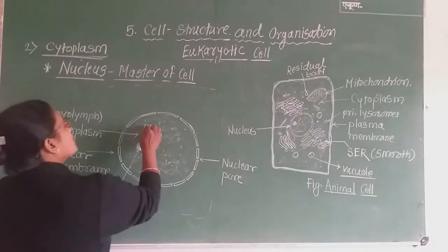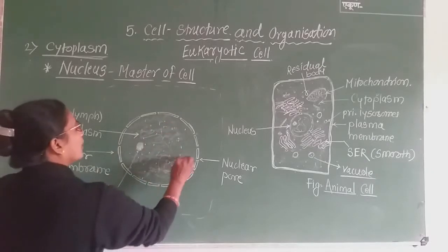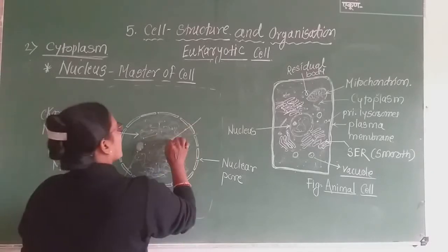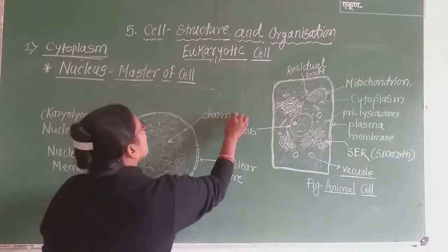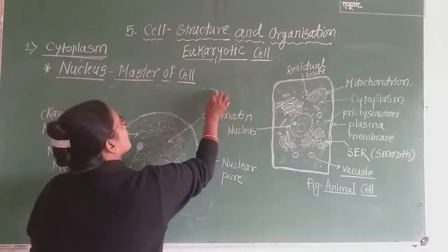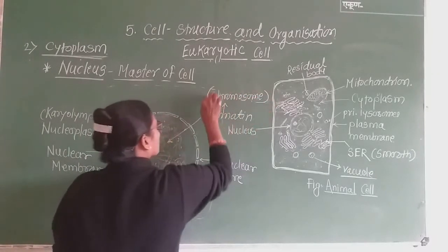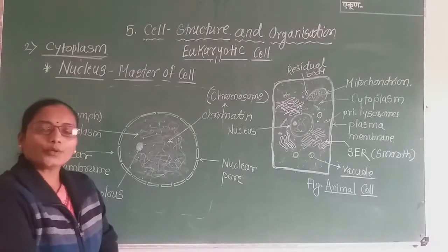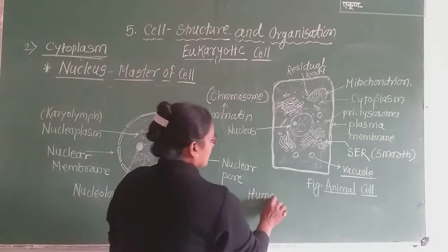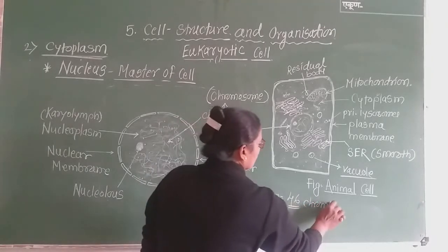In this nucleoplasm, there is a presence of chromatin material. This chromatin material is actually nothing but the chromosomes. Chromosomes are the units of heredity. In the case of human beings, there is a presence of 46 chromosomes.